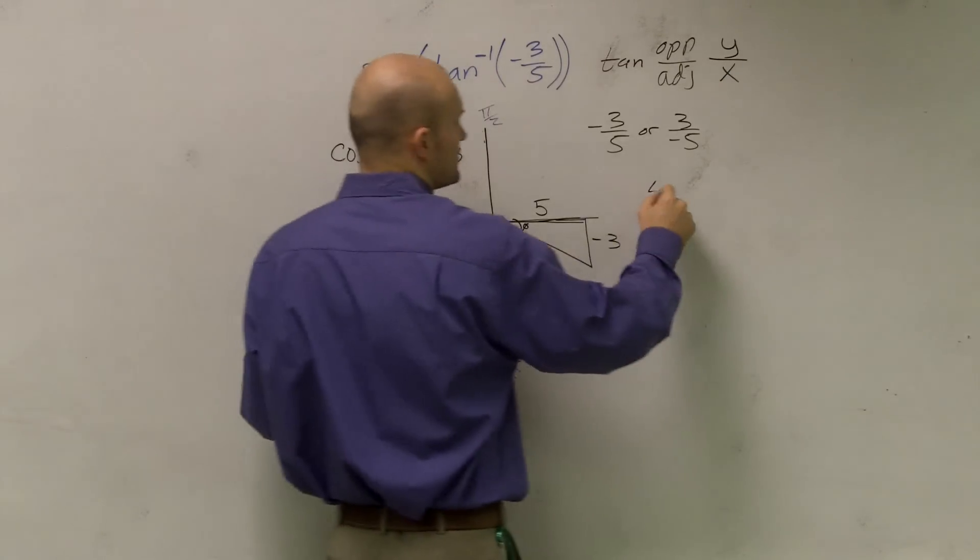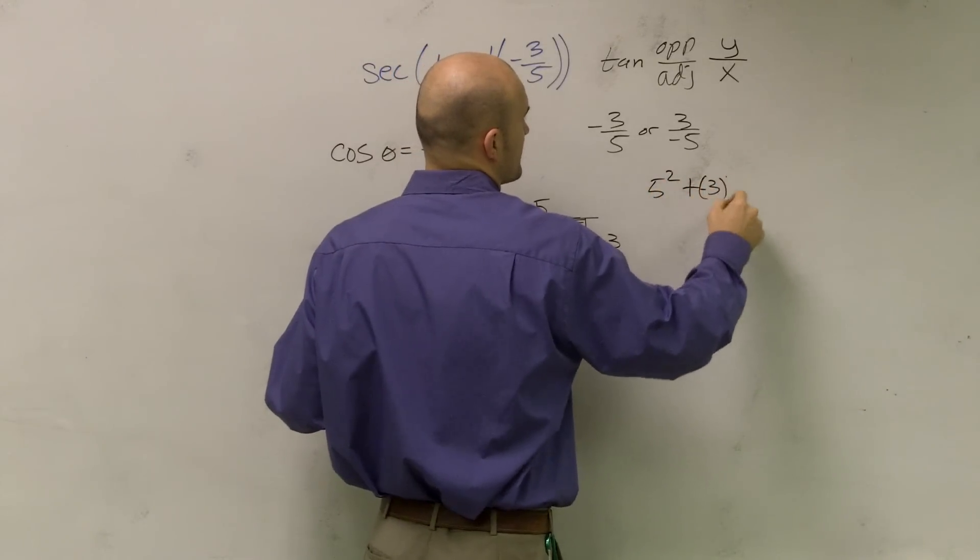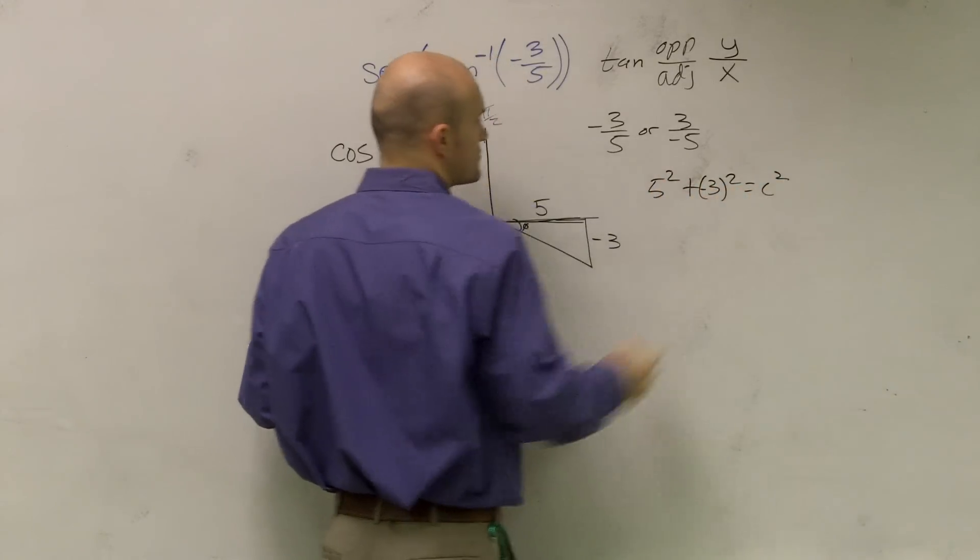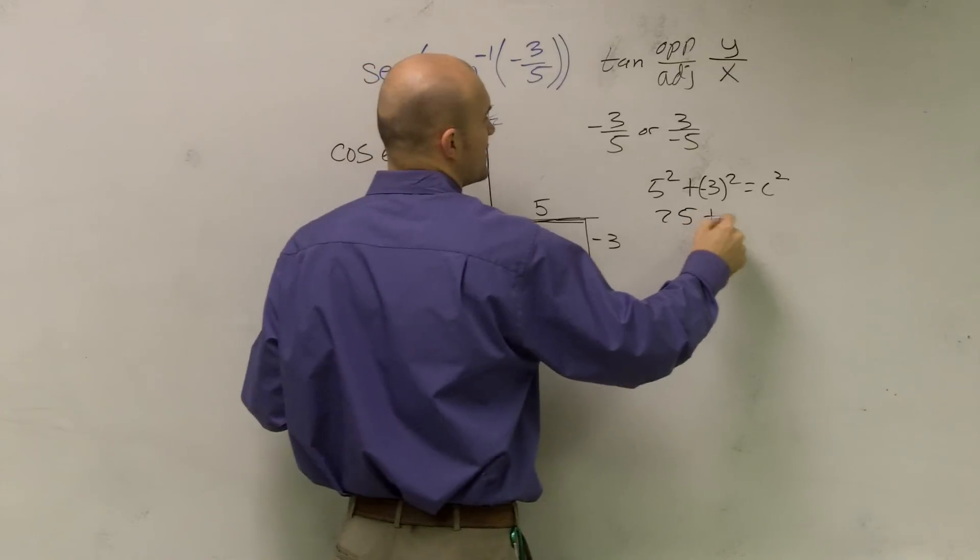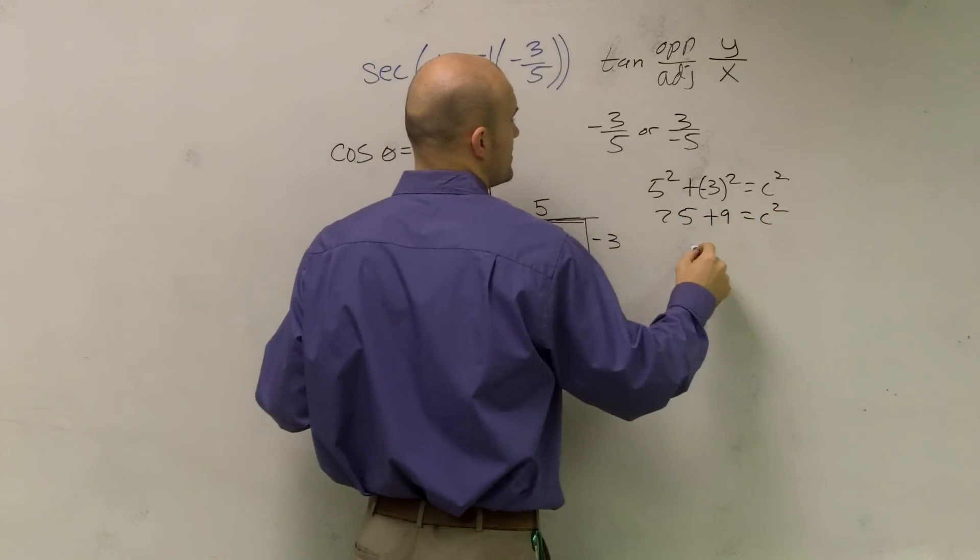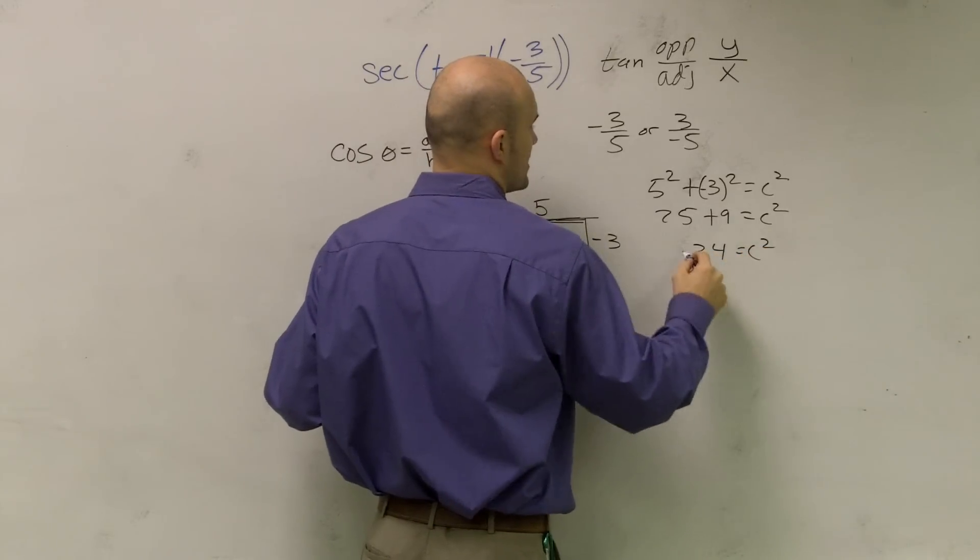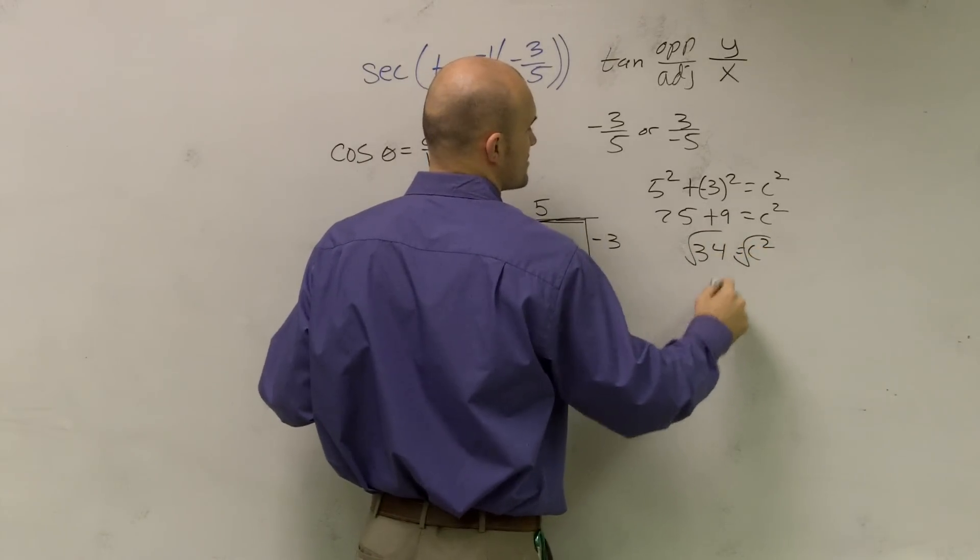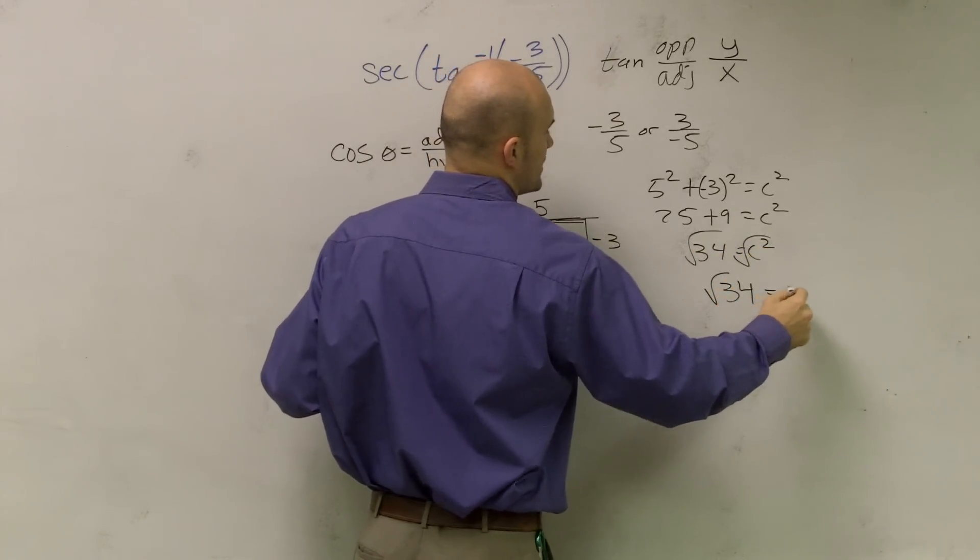So we'll just do a Pythagorean theorem. Five squared plus negative three squared equals c squared. So I get 25 plus nine equals c squared. 34 equals c squared. Take the root of both sides. Root 34 equals c.